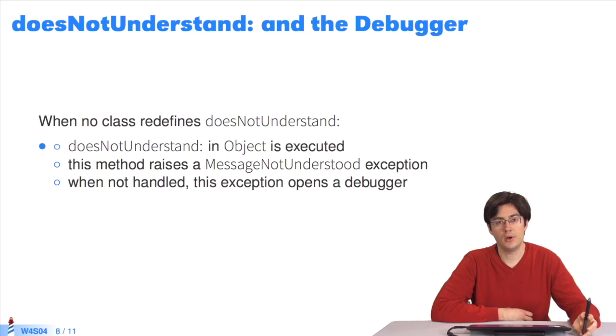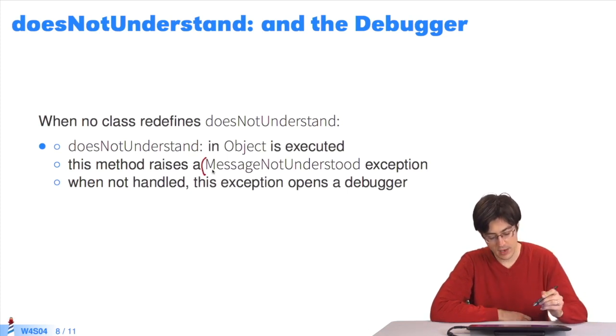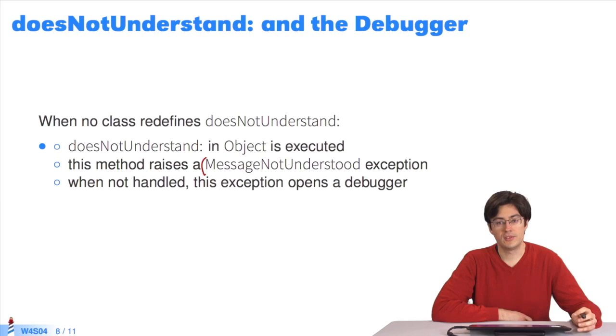Default implementation of doesNotUnderstand is found in the Object class. It raises an exception. The exception is called MessageNotUnderstood. So if the DNU method of the Object class is executed, an exception is raised. That means the code you are writing can catch the exception the way it would catch any exception. The exception opens a debugger for messages that are not understood.